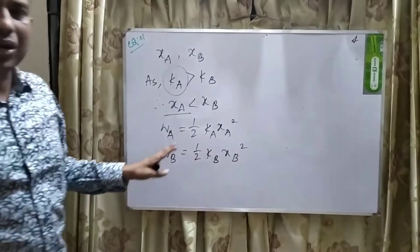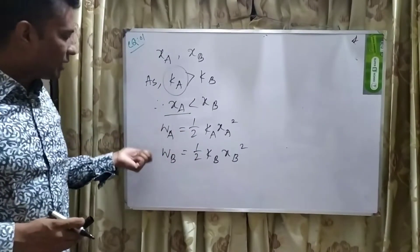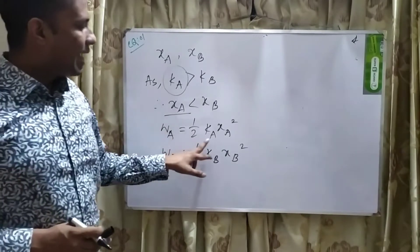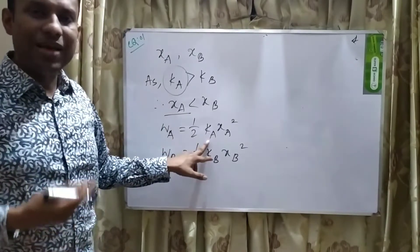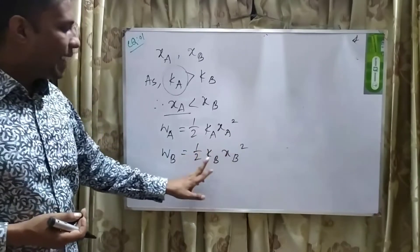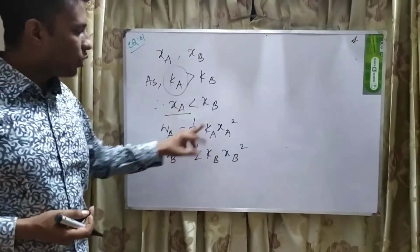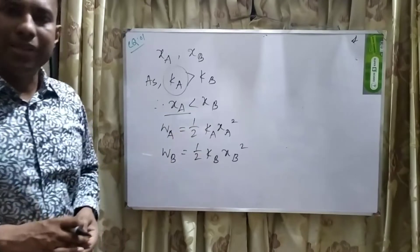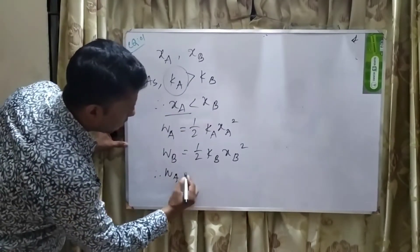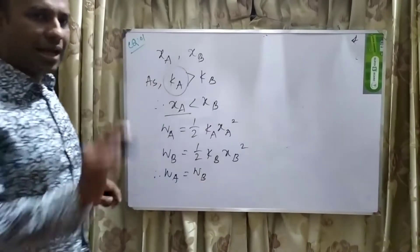These are the equations for work done of both springs: WA and WB. Since Ka is maximum, XA is minimum; and since Kb is minimum, XB is maximum. Therefore, the work done will be equal — WA equals WB. This is the answer.